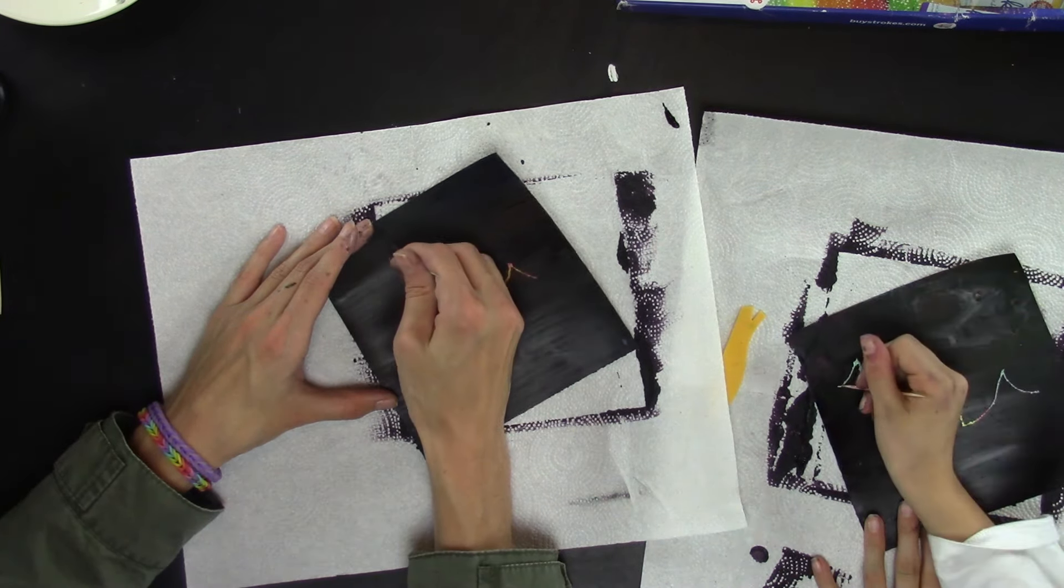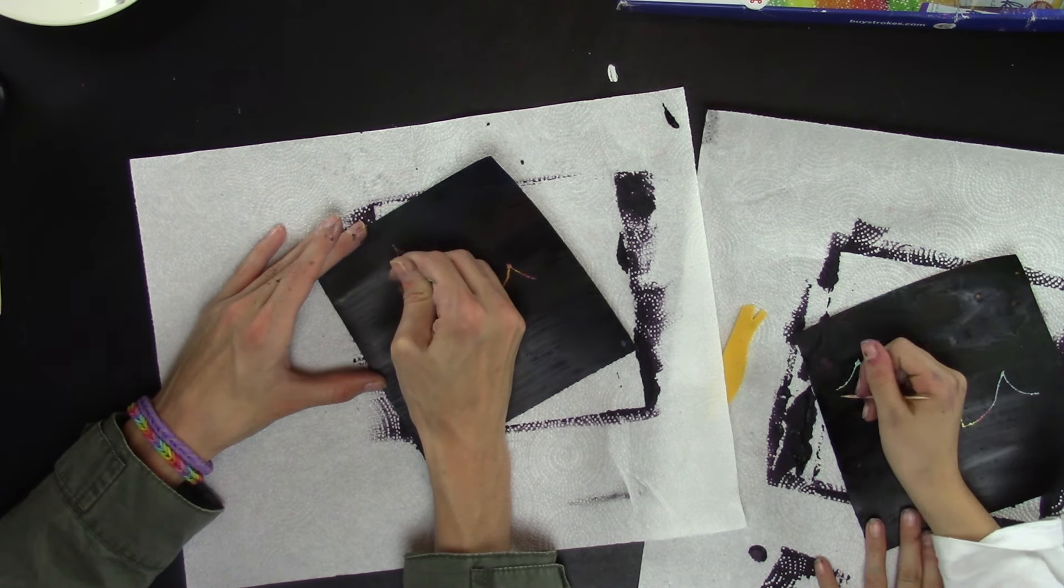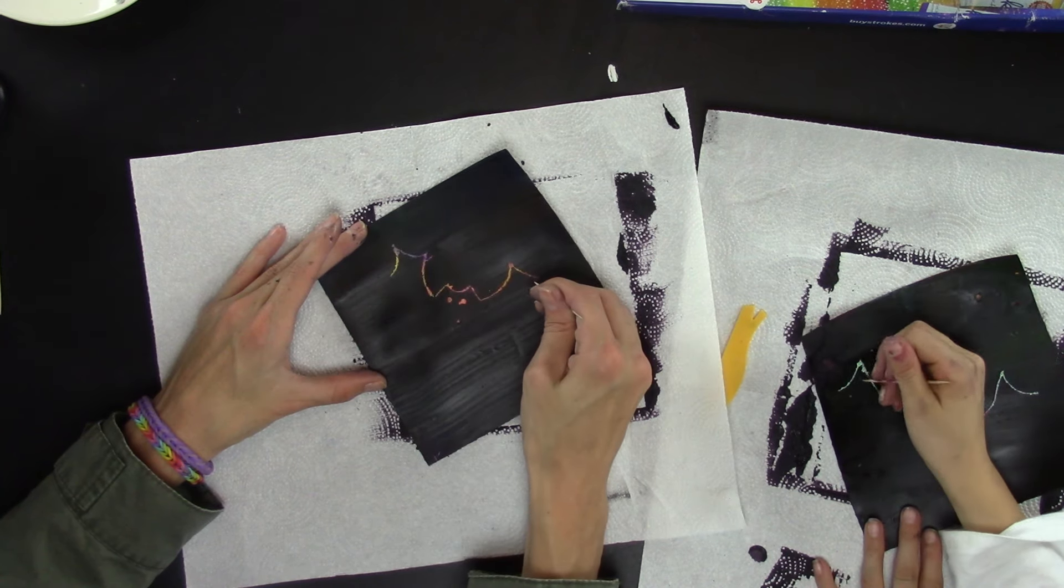And then you're going to come in like this, which is kind of like a U-shape too, but a curved line. Curved line.